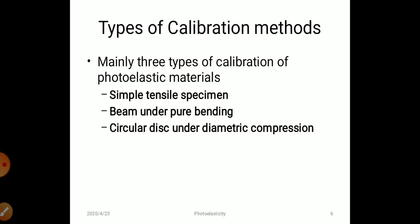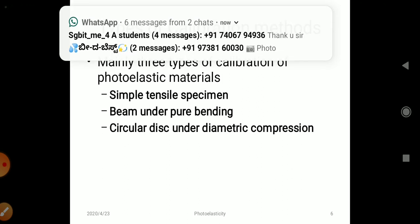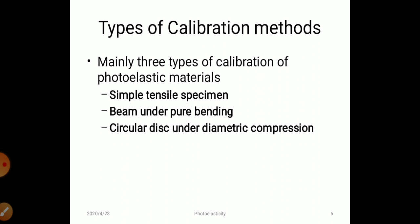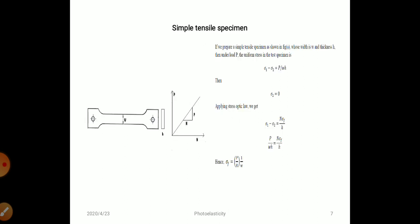There are mainly three types of calibration methods: simple tensile specimen, beam under pure bending, and circular disc under diametric compression. We will be discussing these one by one, starting with the simple tensile specimen.